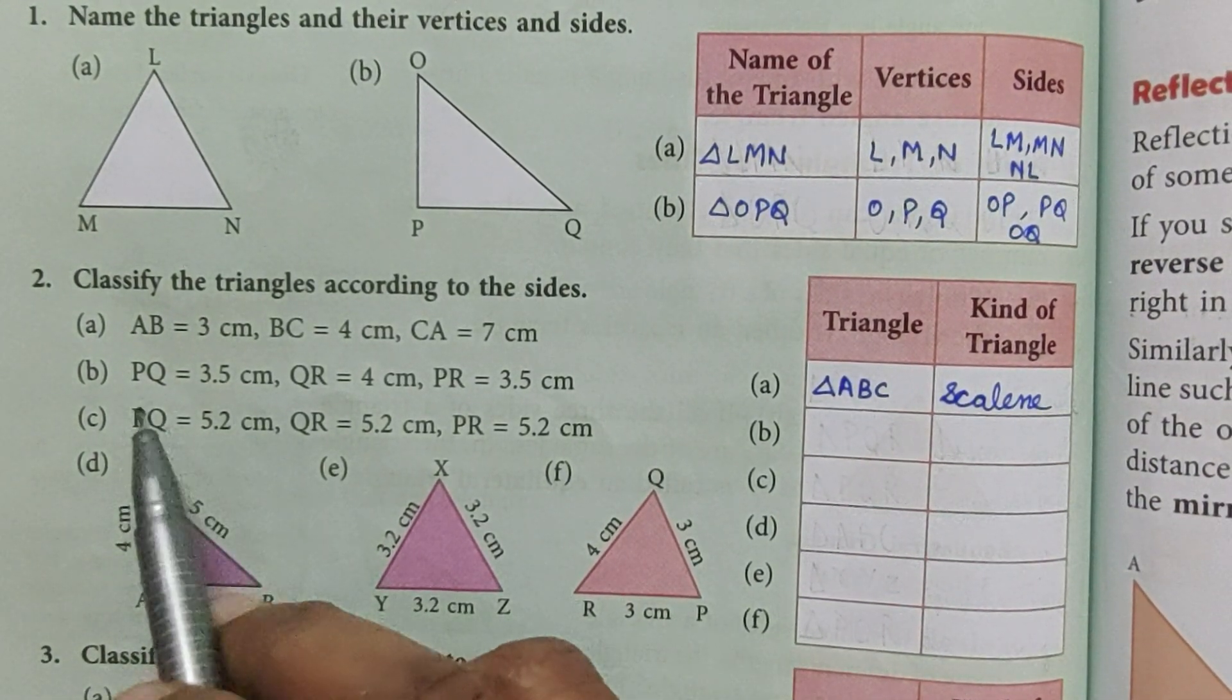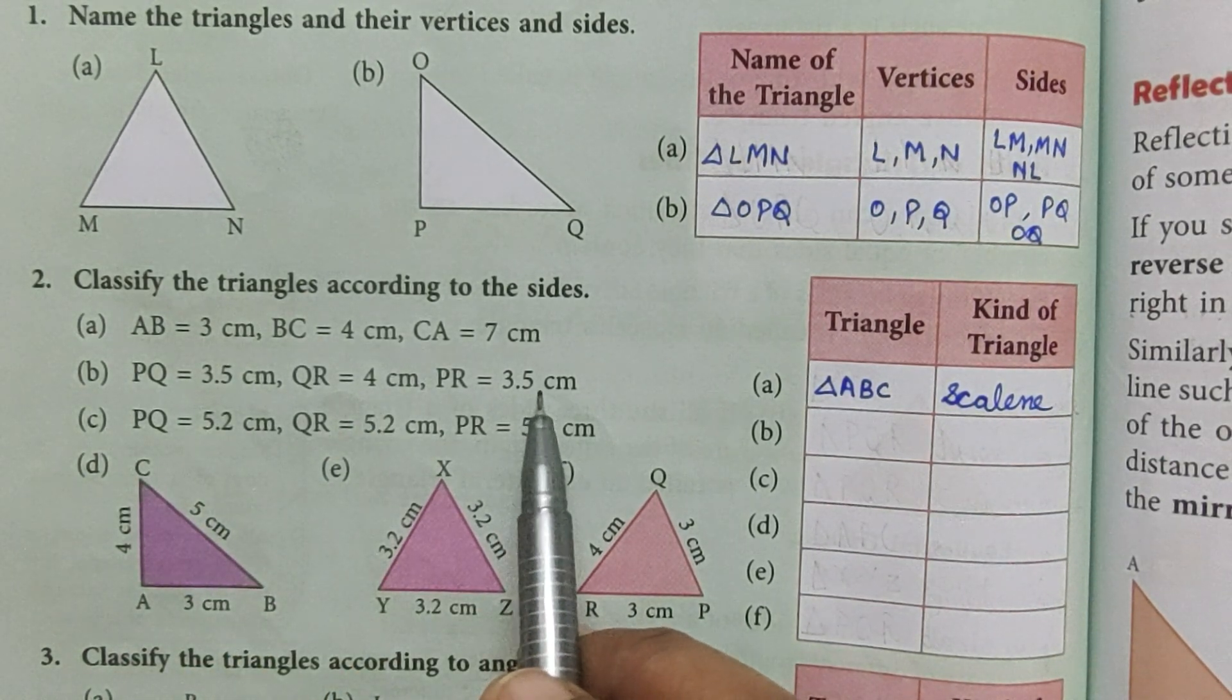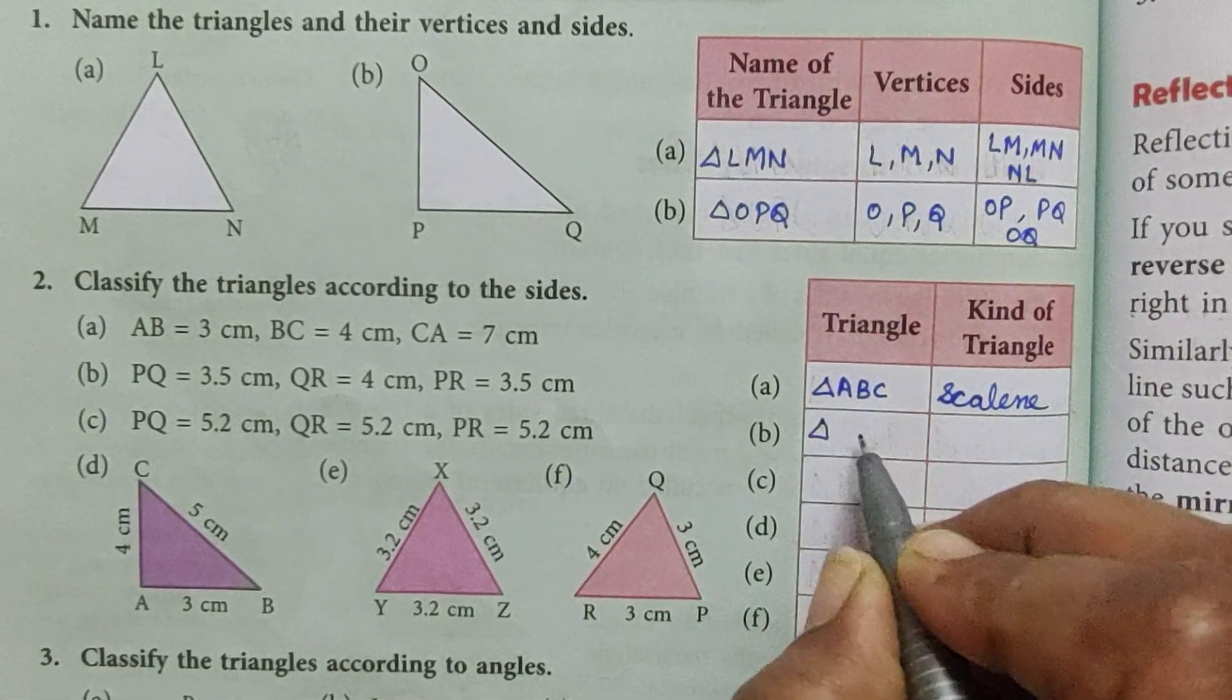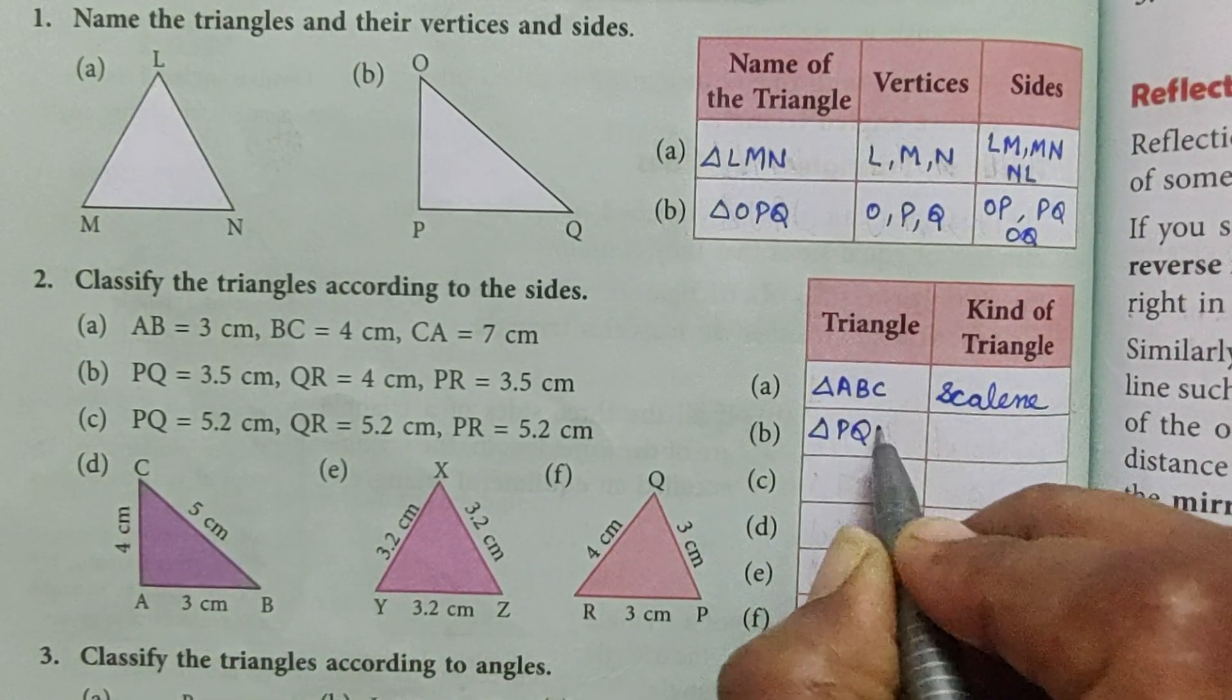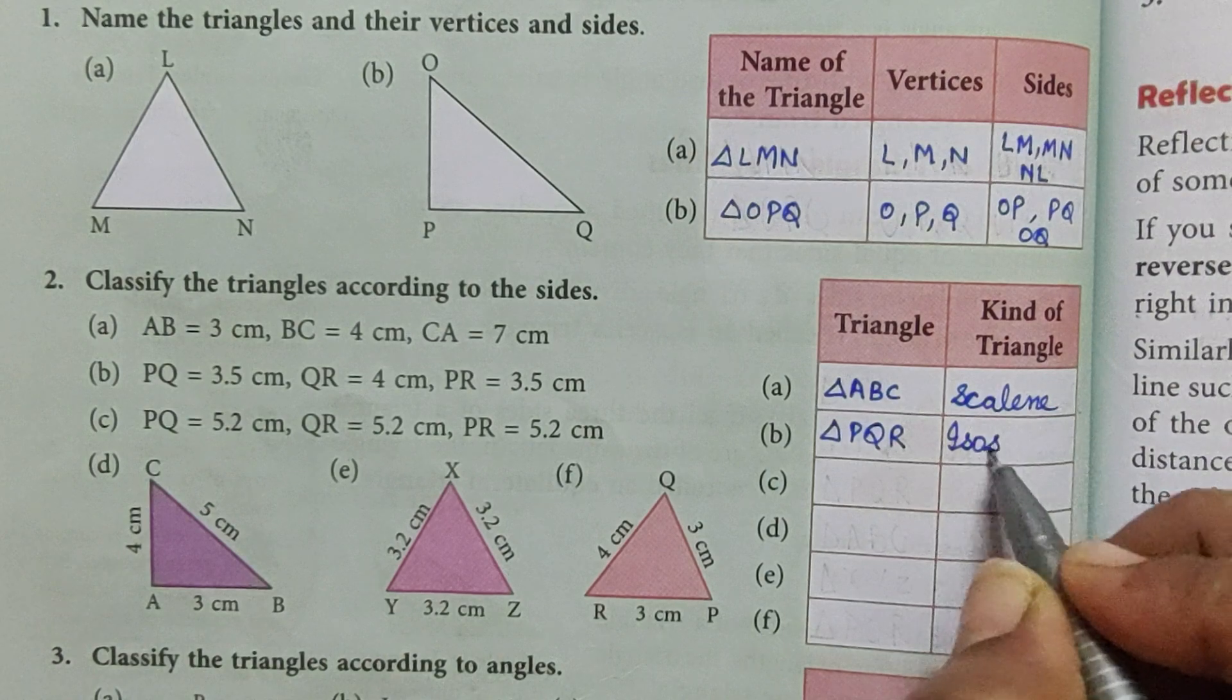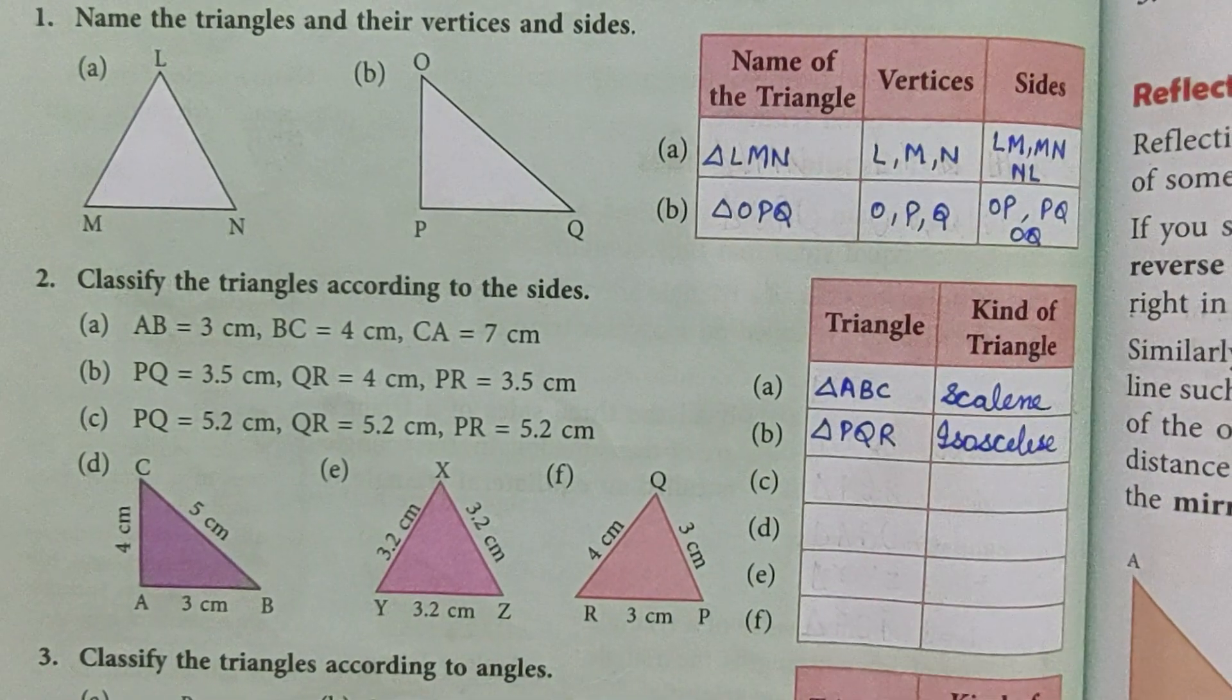Now part B, 3.5, 4 centimeter, and 3.5 centimeter. It means two sides are of equal length, so the name of triangle is PQR and the triangle is isosceles triangle.